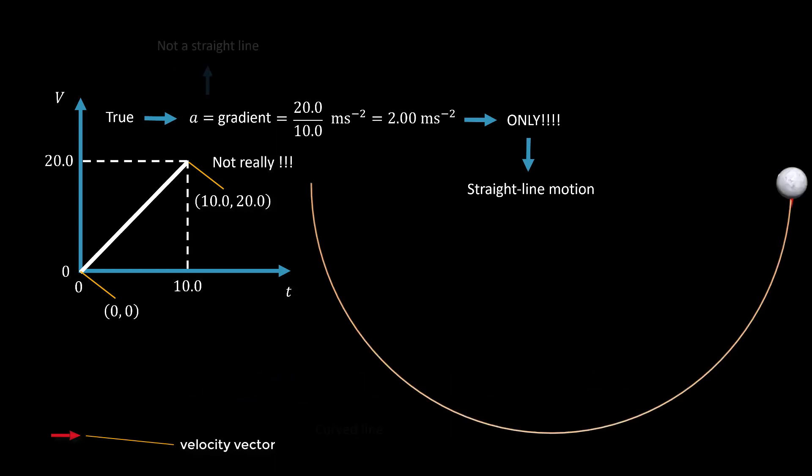For a body not moving along a straight line, the gradient of the speed-time graph is just the rate of increase of speed.